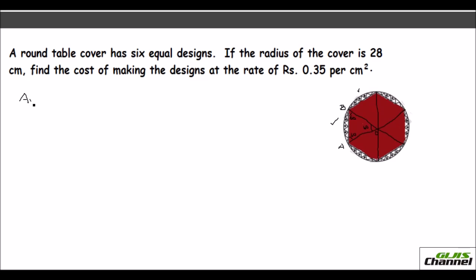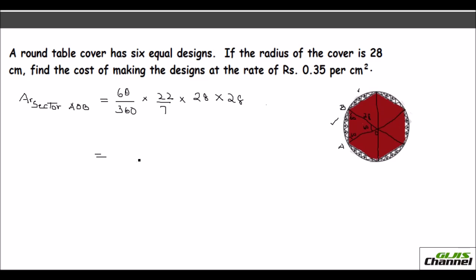Area of sector AOB = θ/360 × π × R² = 60/360 × 22/7 × 28 × 28 = 410.7 cm².